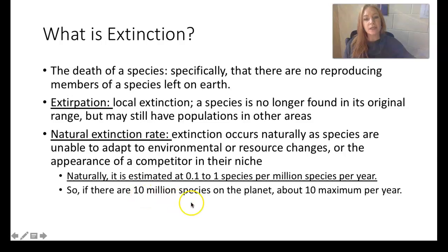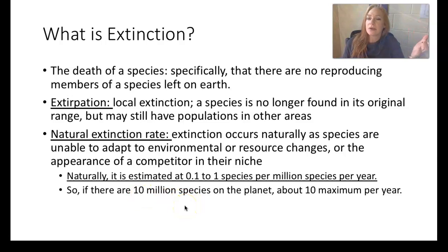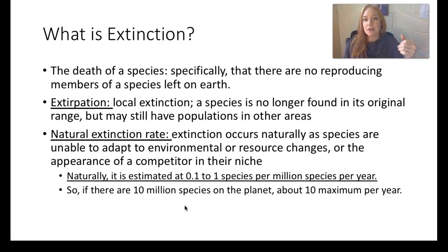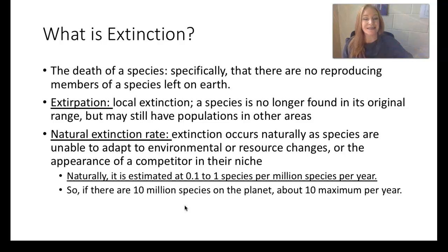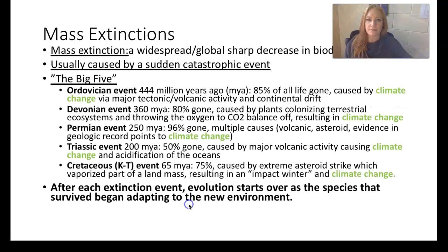Naturally, if we estimate there are 10 million species on the planet — and we've named about 3 million of those — that means naturally about 10 of them will go extinct per year, give or take. The natural extinction rate is estimated at about 0.1 to 1 species per million species per year.